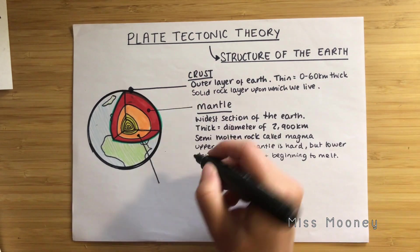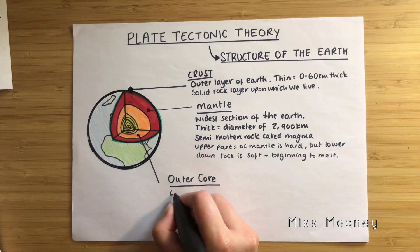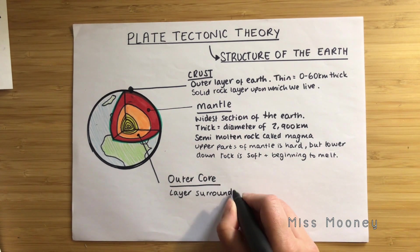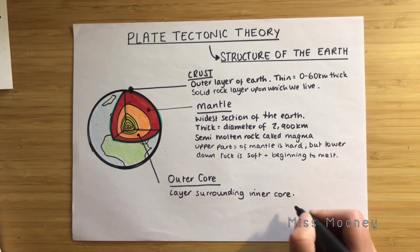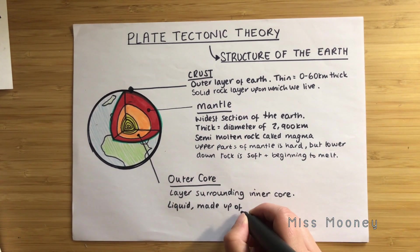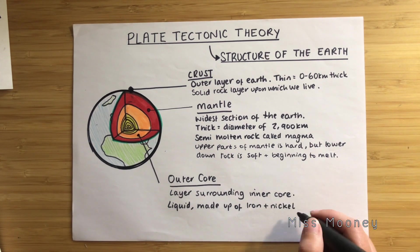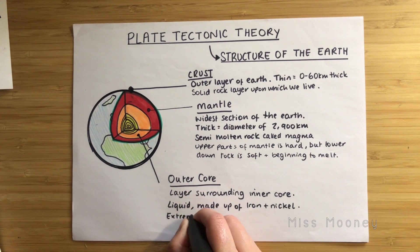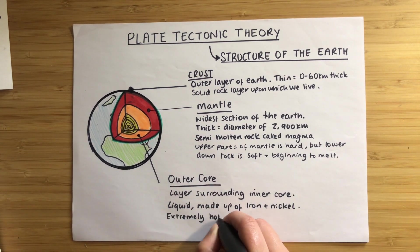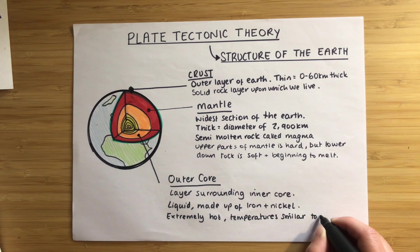Underneath the mantle we find the outer core. It is liquid rock made up of iron and nickel — types of metal. It's extremely hot and temperatures are very similar to the inner core.